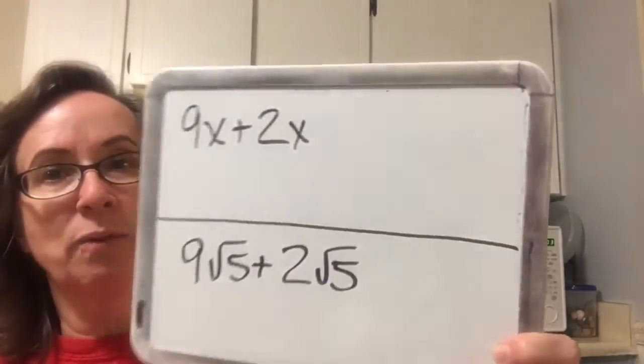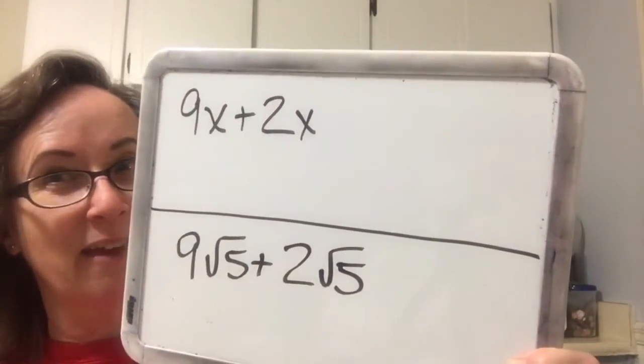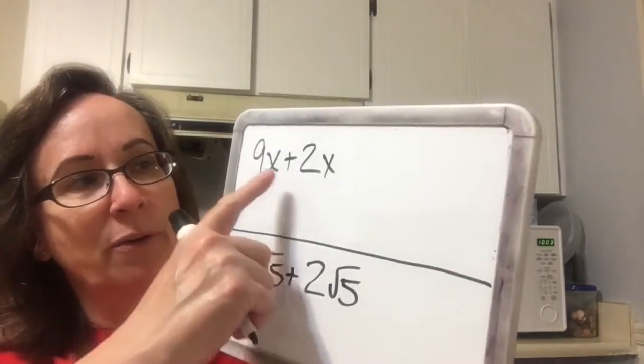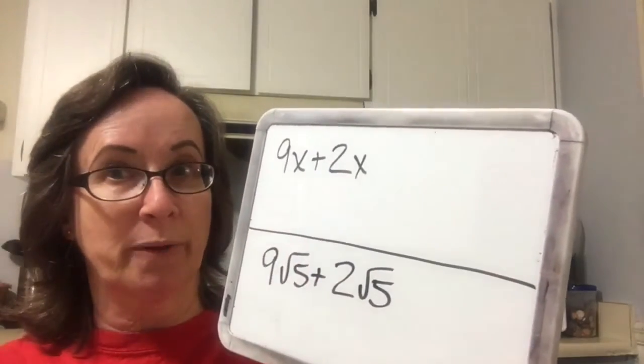Remember, in class I talked about like terms. You've been doing like terms since you were in elementary school. First, you had to get like denominators, and then later on in algebra you had to get like variable parts, and now we're adding to the mix with like radicals.